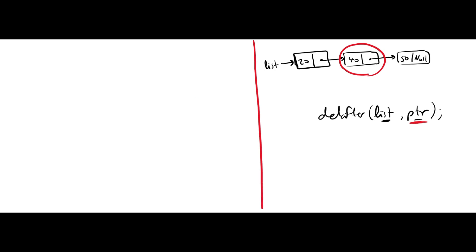I'll write: void delete_after. The first argument will be node_ptr p, and the second argument will be an integer pointer, let's say px.